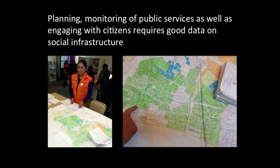It's also important to have data on social infrastructure — hospitals, schools, roads — which is very important for planning public services, engaging with citizens, and disaster preparedness. OpenStreetMap has been used in places like Haiti and now the Philippines, where crisis mapping communities map things after disasters. There are also World Bank-funded projects trying to do it beforehand — for example in Nepal, which will probably be struck by a big earthquake in the coming years, so they're trying to do the mapping now instead.